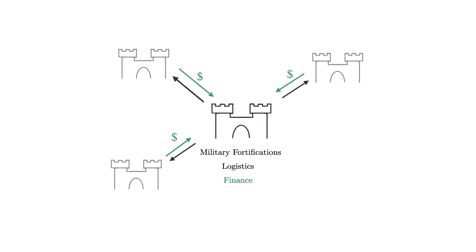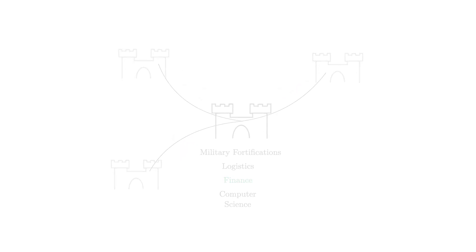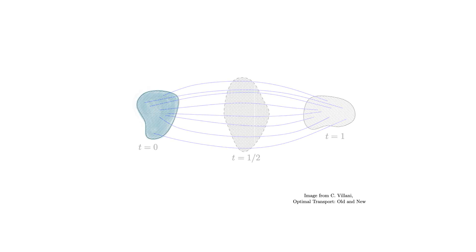Optimal transport is a fascinating topic, and it's one with a long history. It was originally studied in the 18th century in the context of building military fortifications. Since then, it has found applications in logistics, finance, computer science, and many other areas as well. Despite how old and important this subject is, our mathematical understanding of it is actually quite recent. In fact, we only started to understand many of the basic properties of optimal transport in the last 30 years or so.